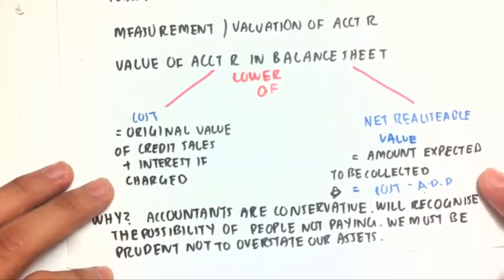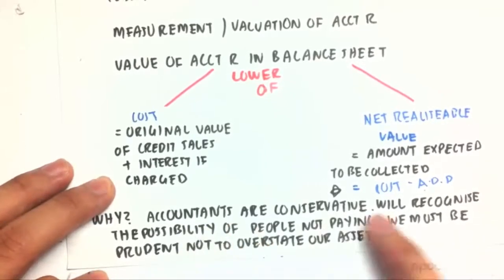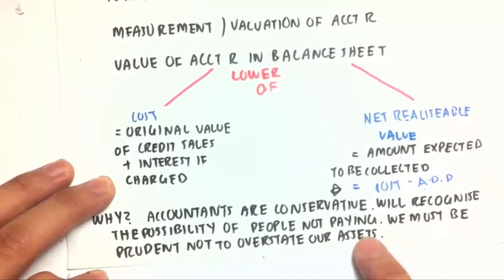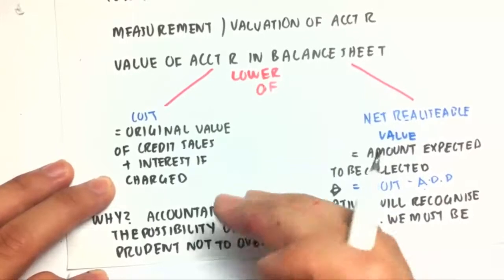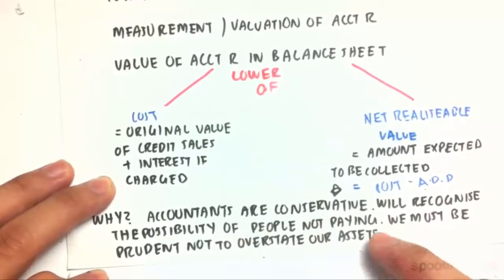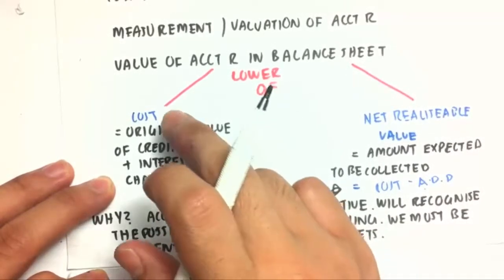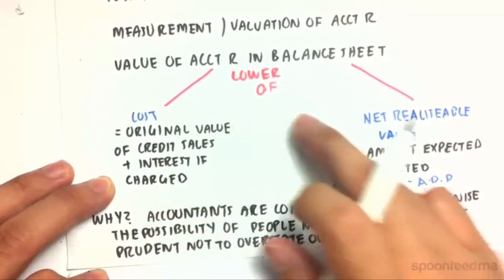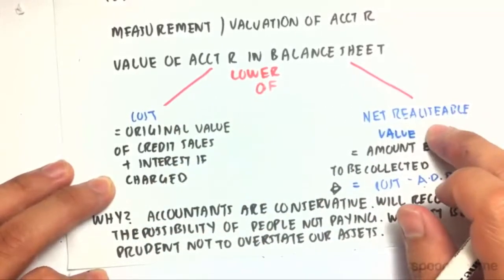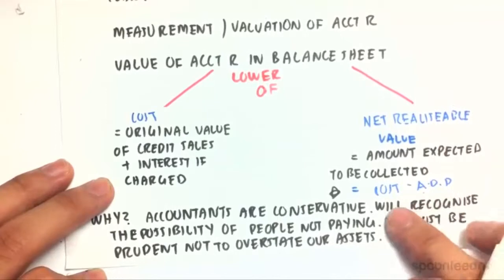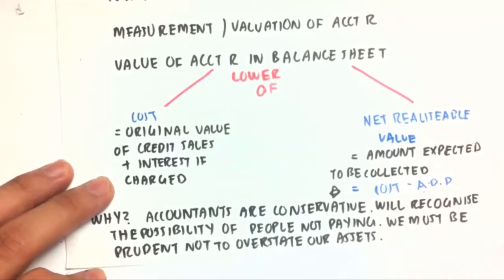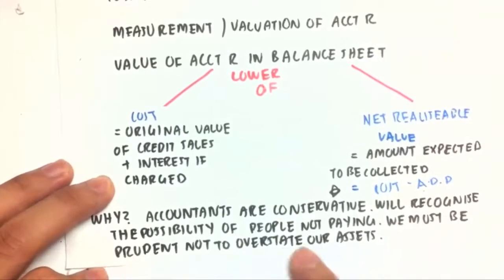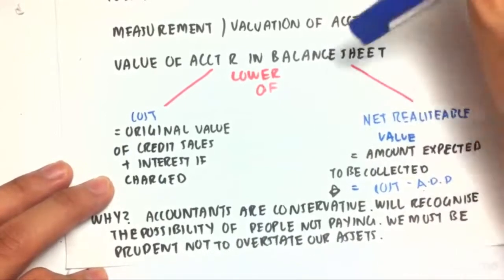So why do accountants actually do this? Accountants are conservative and will recognize the possibility of people not paying. If we can't get all our costs back, we recognize that the net realizable value would be cost minus allowance for doubtful debt — any allowance for risk. Therefore, we must be prudent not to overstate our assets of accounts receivable.